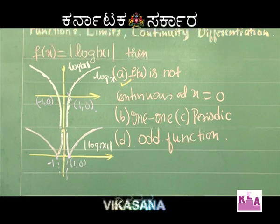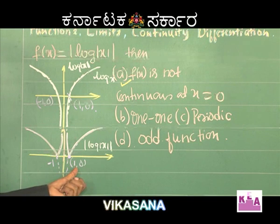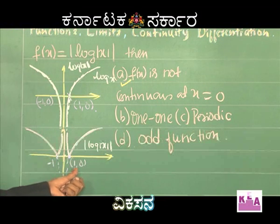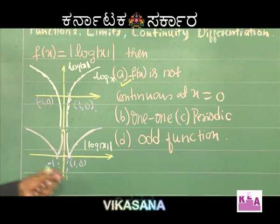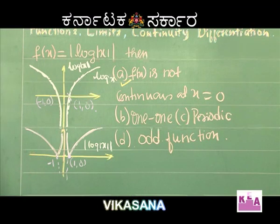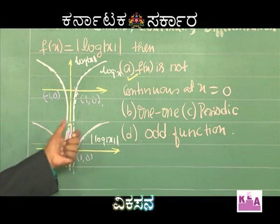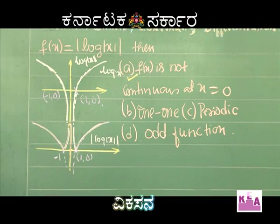The function is not differentiable at x = −1 and x = 1. Are those the only two points? No — there is one more point. When x = 0, the function is also not differentiable because it is not continuous there. So |log|x|| is not differentiable at x = −1, x = 1, and x = 0.